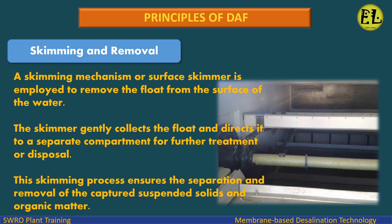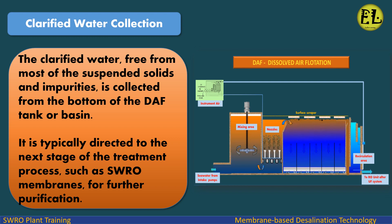Skimming and removal: A skimming mechanism or surface skimmer is employed to remove the float from the surface of the water. The skimmer gently collects the float and directs it to a separate compartment for further treatment or disposal. This skimming process ensures the separation and removal of the captured suspended solids and organic matter. The clarified water, free from most of the suspended solids and impurities, is collected from the bottom of the DAF tank or basin, and is typically directed to the next stage of the treatment process, such as SWRO membranes, for further purification.